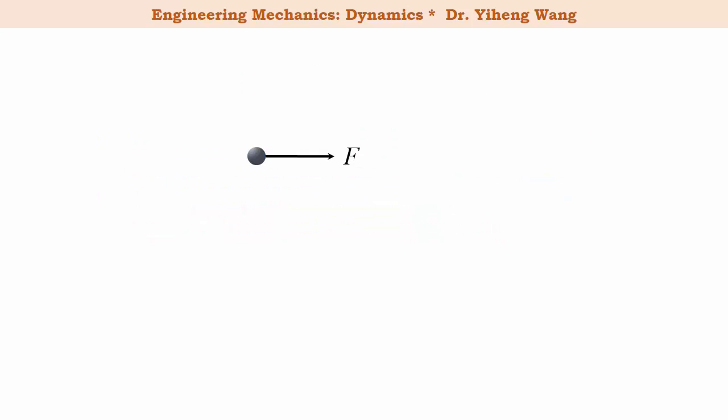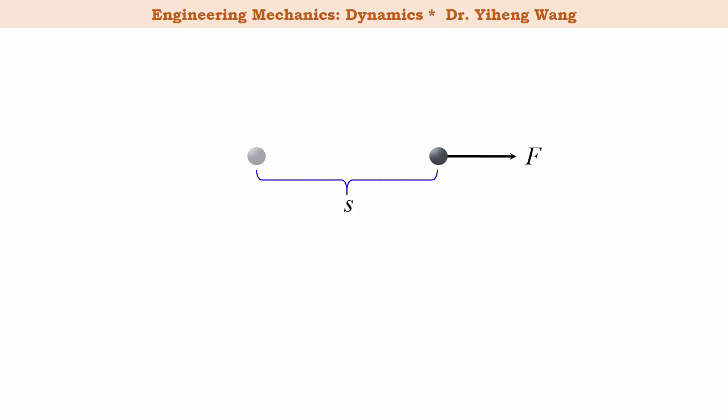Let's first look at a simple scenario. If a particle is subjected to a constant force F, and under this force, this particle has moved along the direction of the force for a displacement of S, then the work done by this force to this particle, U, simply equals to F multiplied by S.